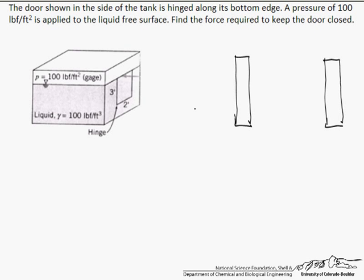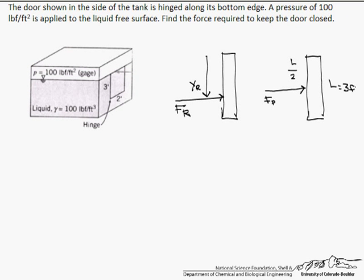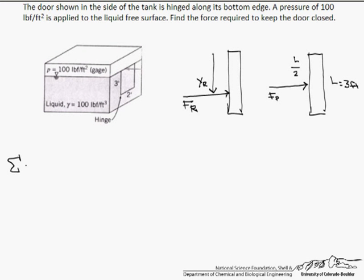Let's first look at the force from the water, and we know that is going to be a resultant force that we can calculate. That is going to be located at y sub r. The next thing is we are going to look at this force from the pressure that is given, and because it is uniform it is going to be acting at l over 2, where l is the length of this door which is 3 feet. Our governing equation is that the sum of the moments equals 0.